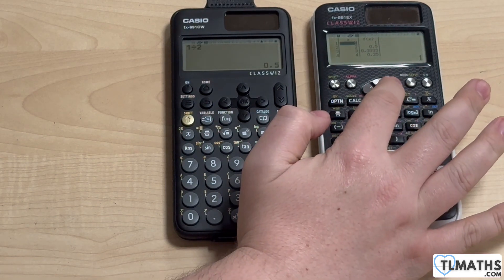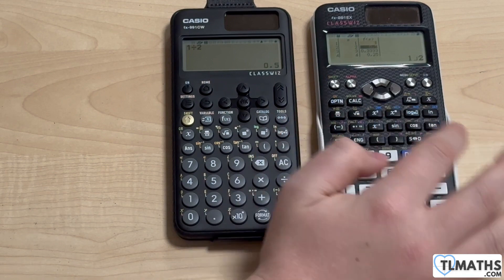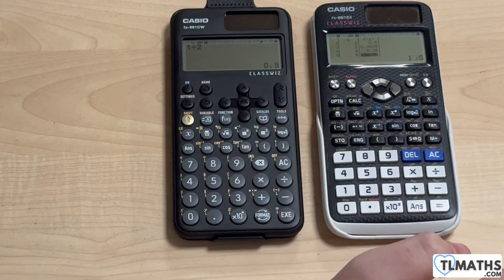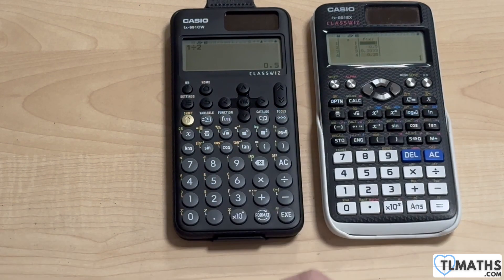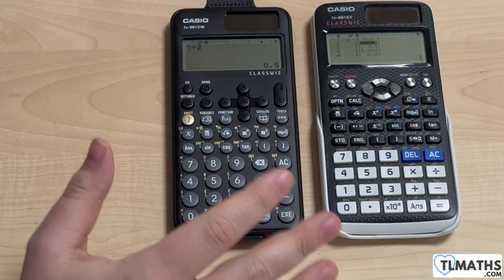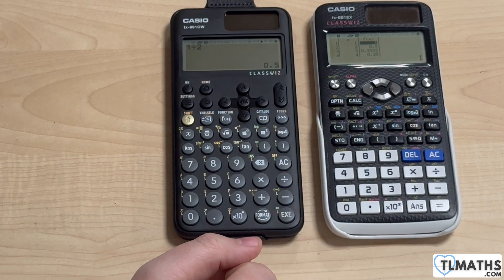Press equals and I've got my values. And I can cycle through the values that I have. Okay, all perfectly fine, quite easy to use. So let's try and do the same thing on the new ClassWiz.